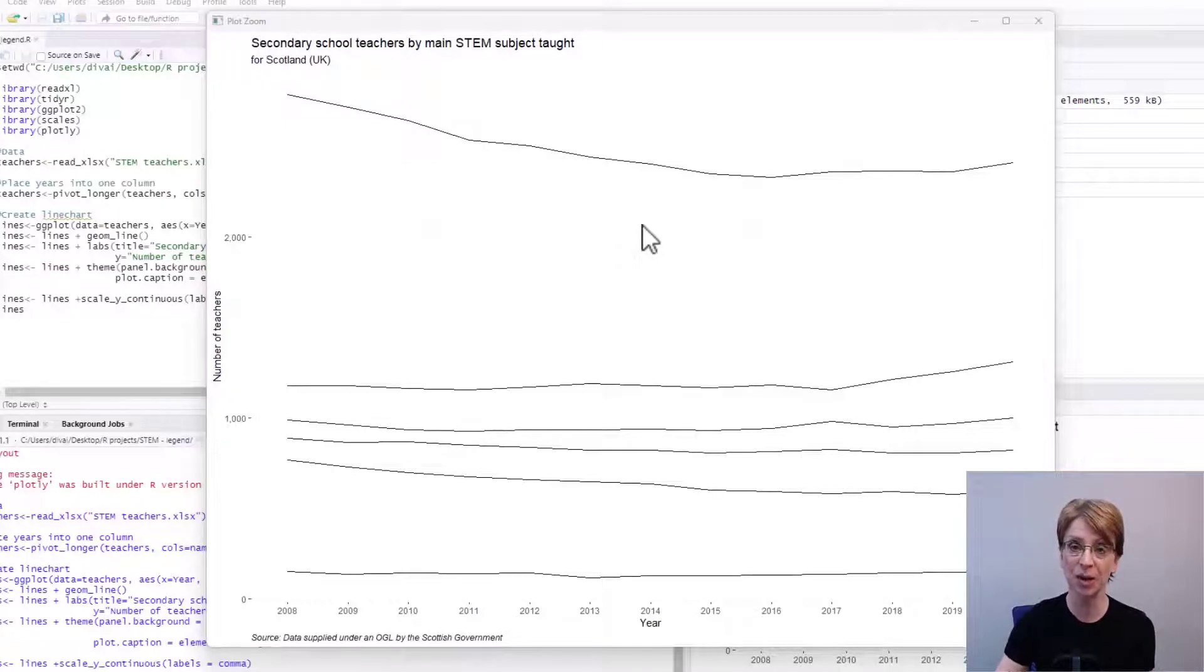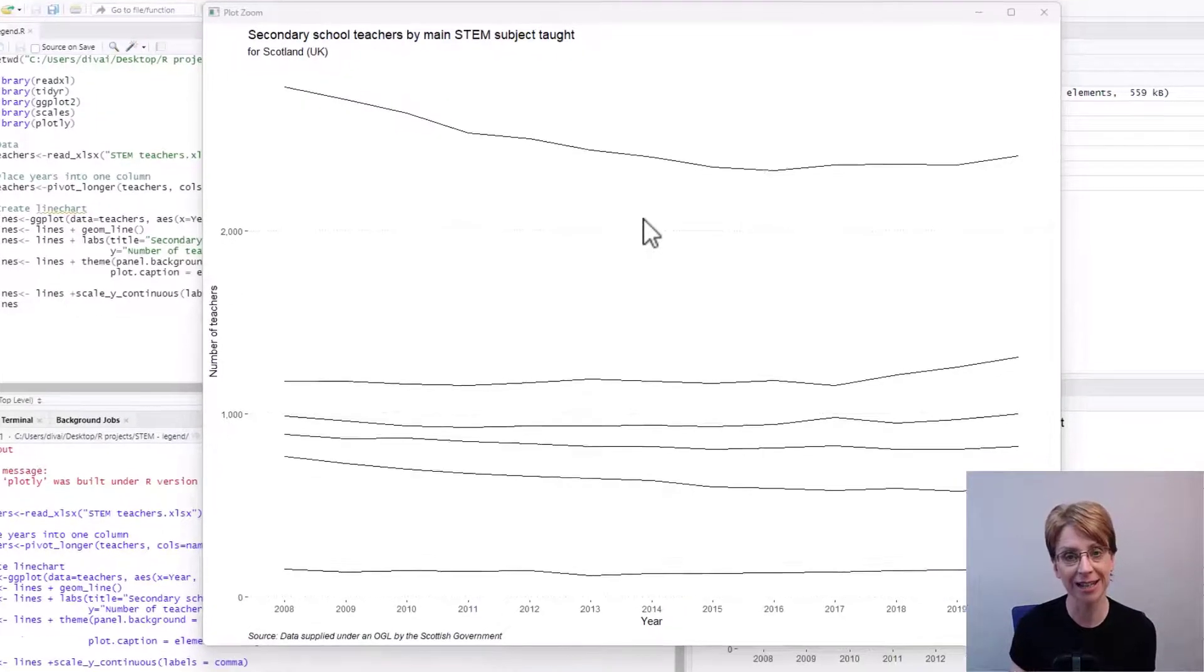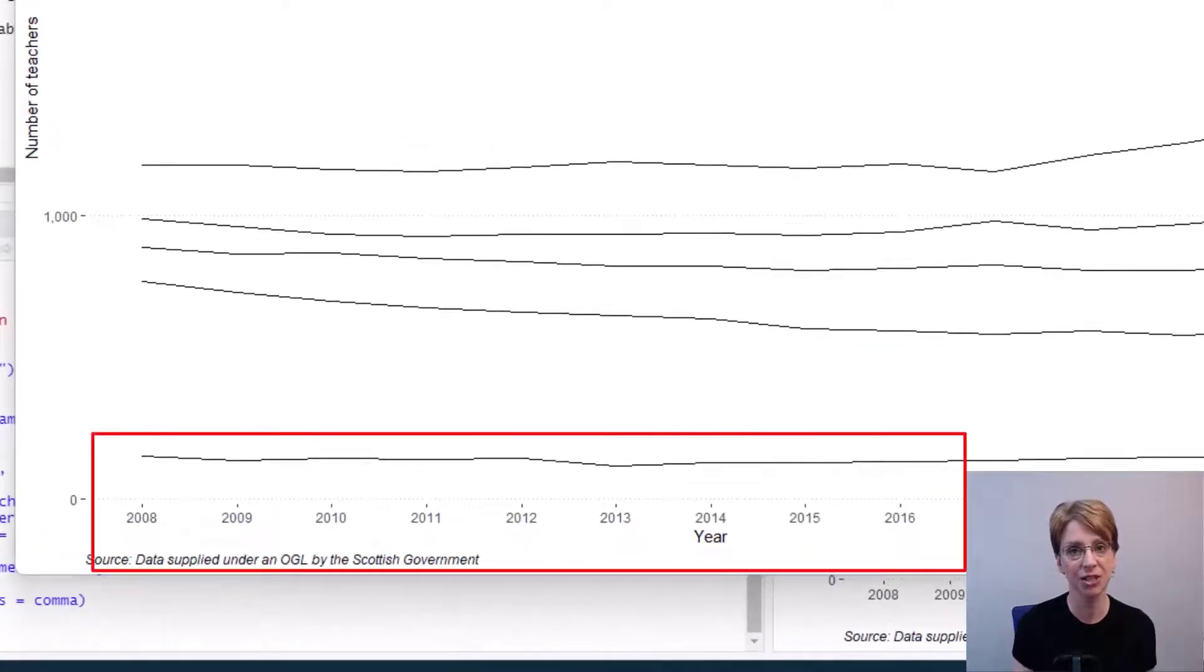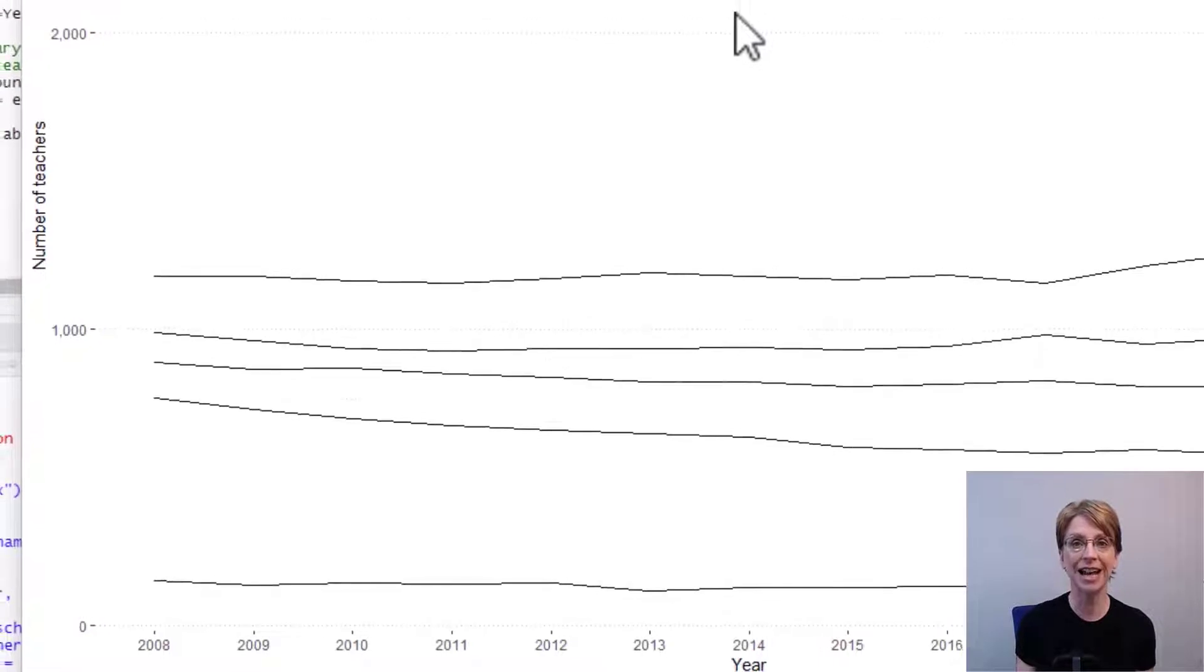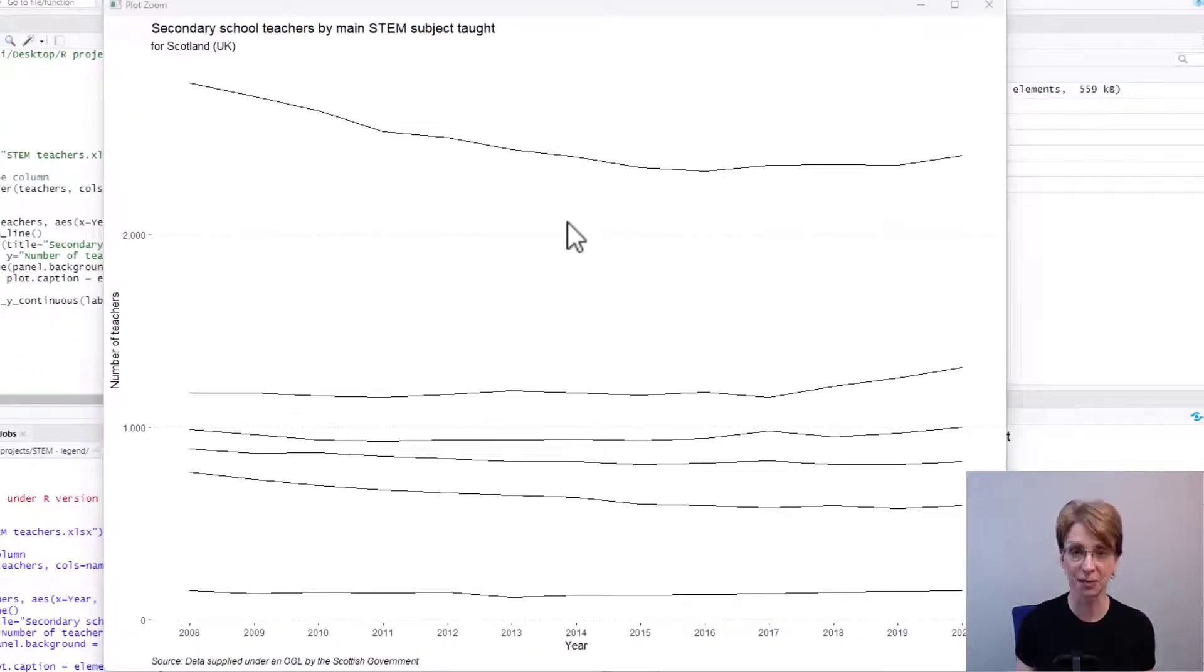In our studio I have set up a basic line diagram. Along the x-axis you can see it has years. On the y-axis we count the number of teachers and then each line relates to a separate subject.